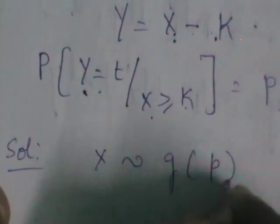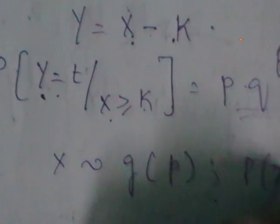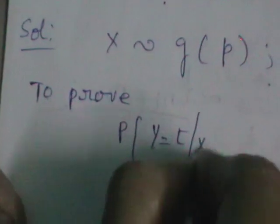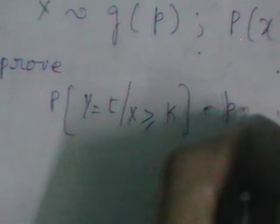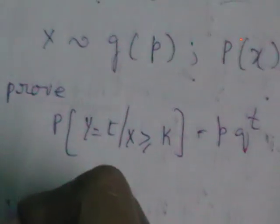What is given? x follows a geometric distribution with parameter p, so P(x = t) = p · q^t. In place of x we are considering t. Generally we write it as p · q^x; here I wrote p · q^t as we are dealing with waiting times. What you need to prove is P(y = t | x ≥ k) = p · q^t.